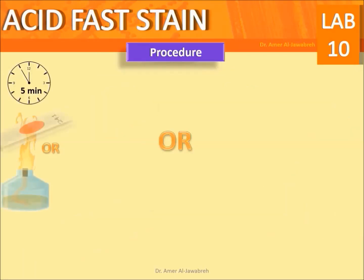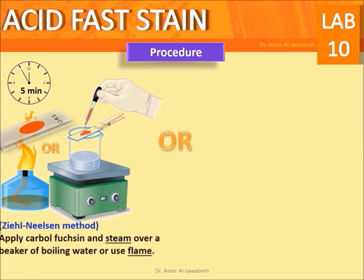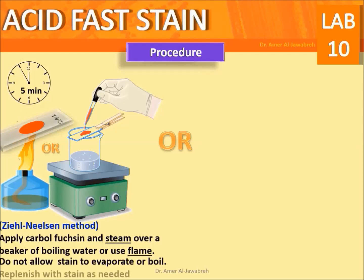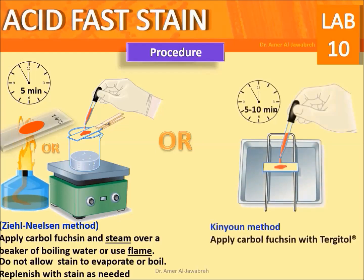Procedure - Ziehl-Neelsen method: Apply carbolfuchsin and steam over a beaker of boiling water, or use a flame, for five minutes. Do not allow the stain to evaporate or boil; replenish with stain as needed. Kinyoun method: Apply carbolfuchsin with tergitol for five to ten minutes.